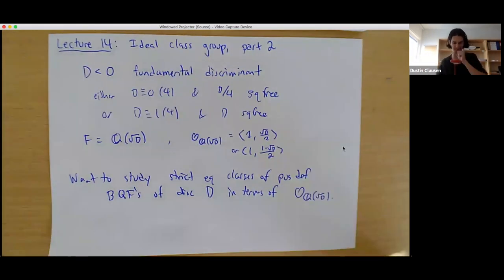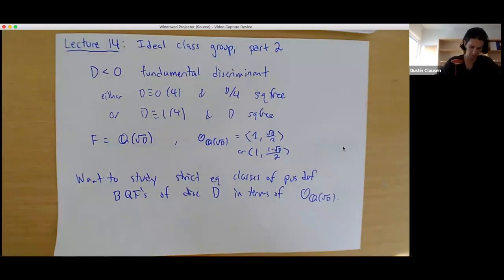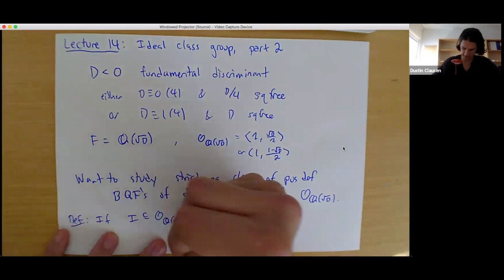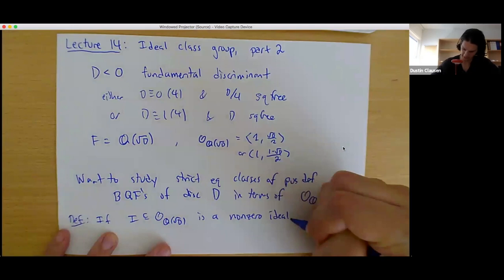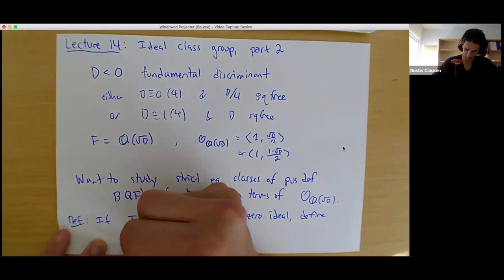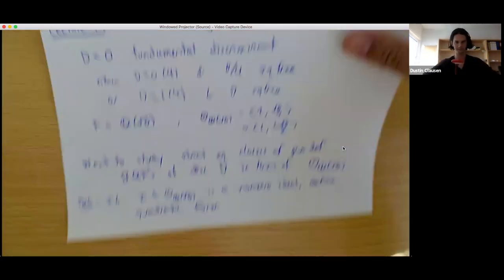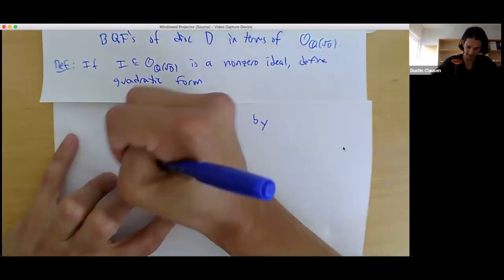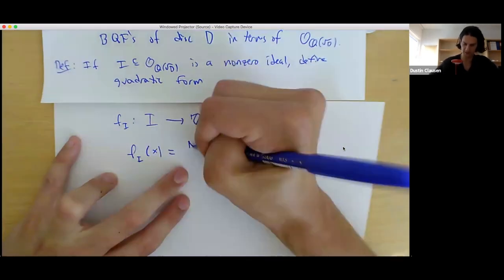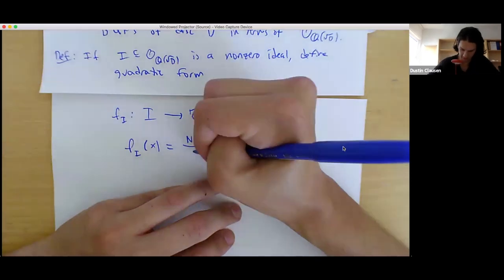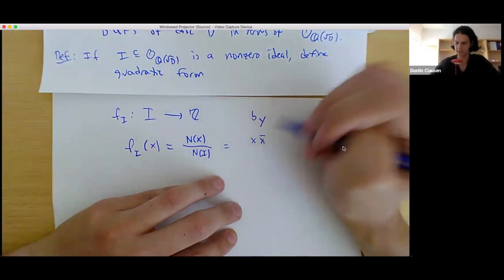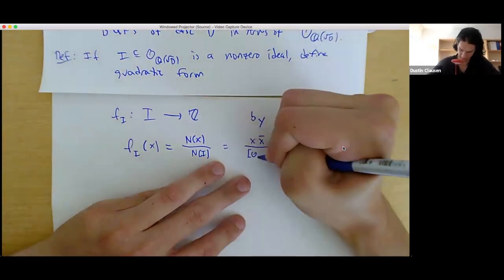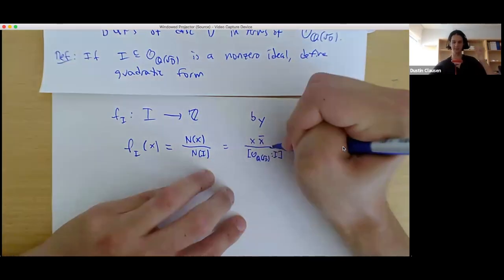The ring of integers is generated as an abelian group freely by 1 and square root of D over 2 if D is zero mod four, or 1 minus square root of D over 2 if D is one mod four. And we are interested in strict equivalence classes of positive definite binary quadratic forms of discriminant D in terms of the ring Q adjoined square root of D. The basis for this is the following definition: if I inside the ring of integers is a non-zero ideal, define the quadratic form f sub I.